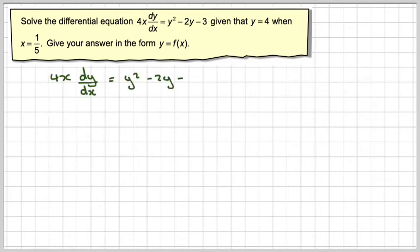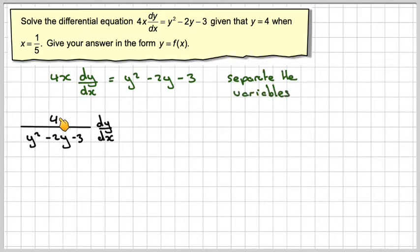If we write down this differential equation 4x dy/dx = y² - 2y - 3, we need to separate the variables first. So we make it 4 over y² - 2y - 3 times dy/dx, and then take the x by writing it as 1 over x.